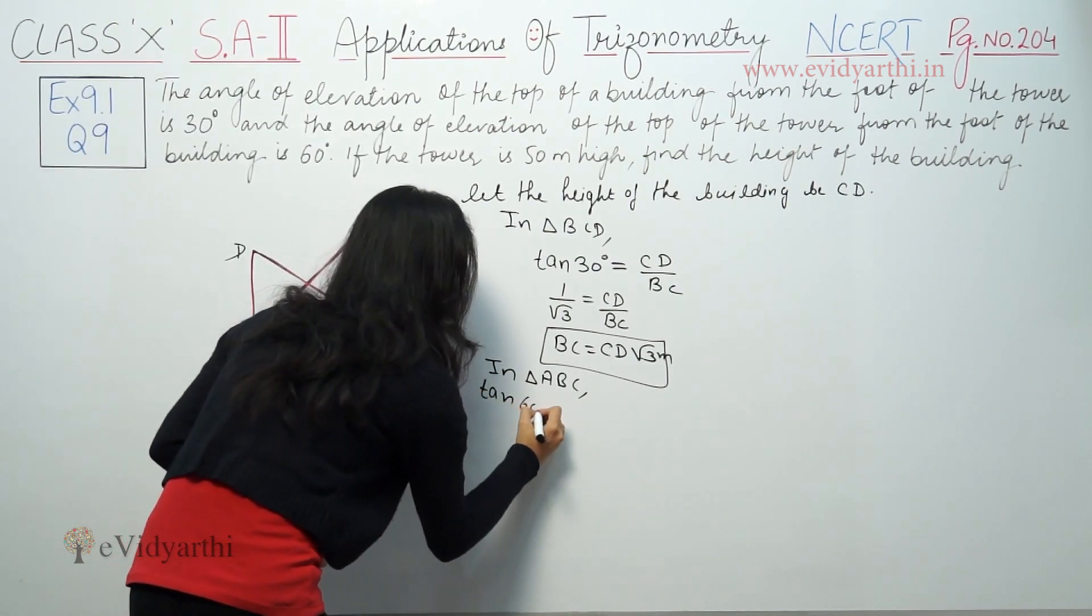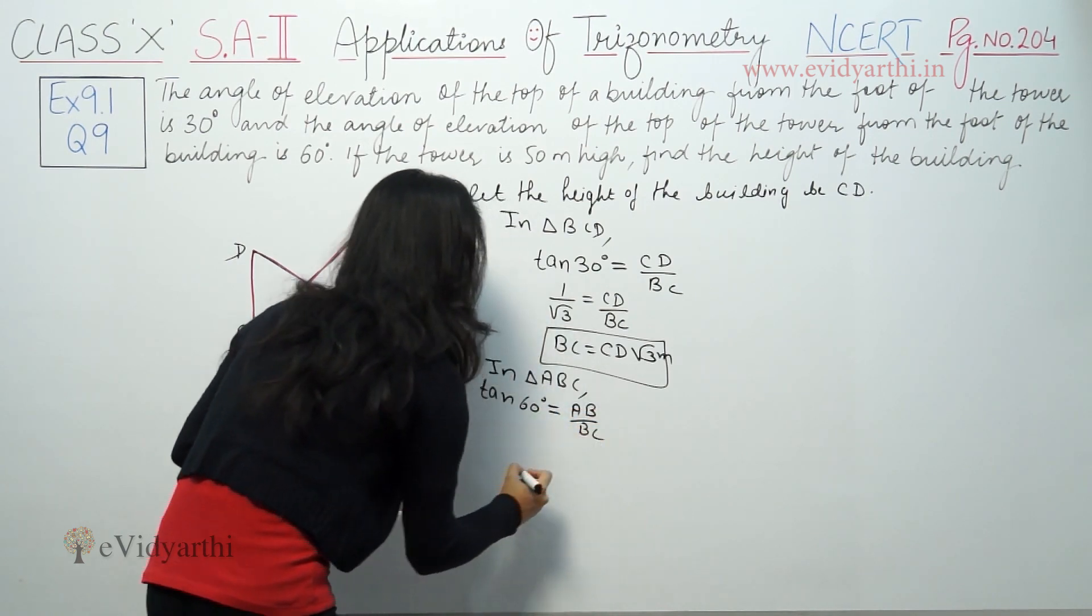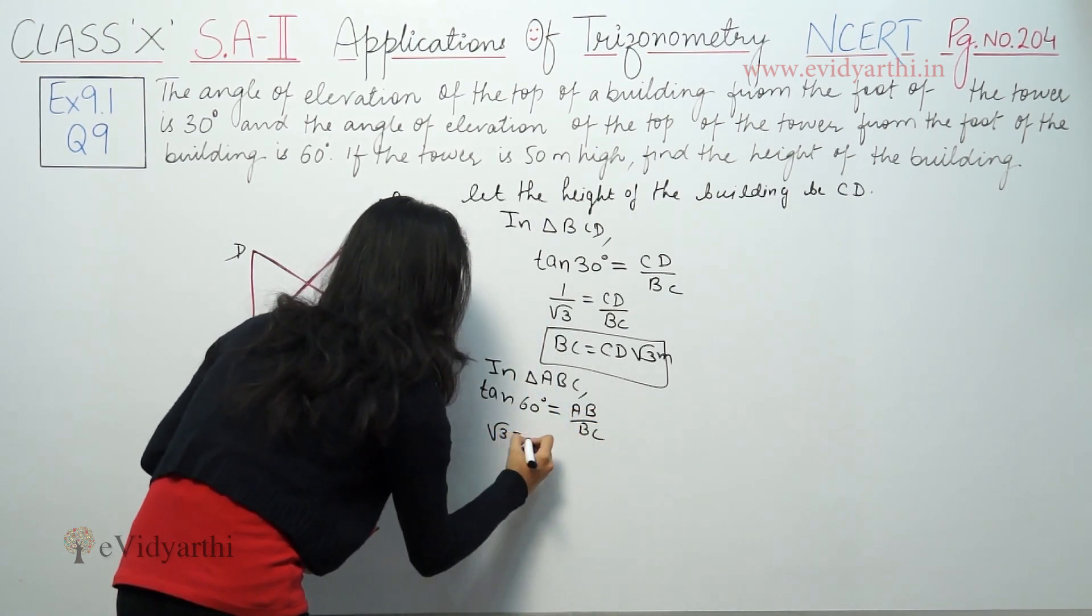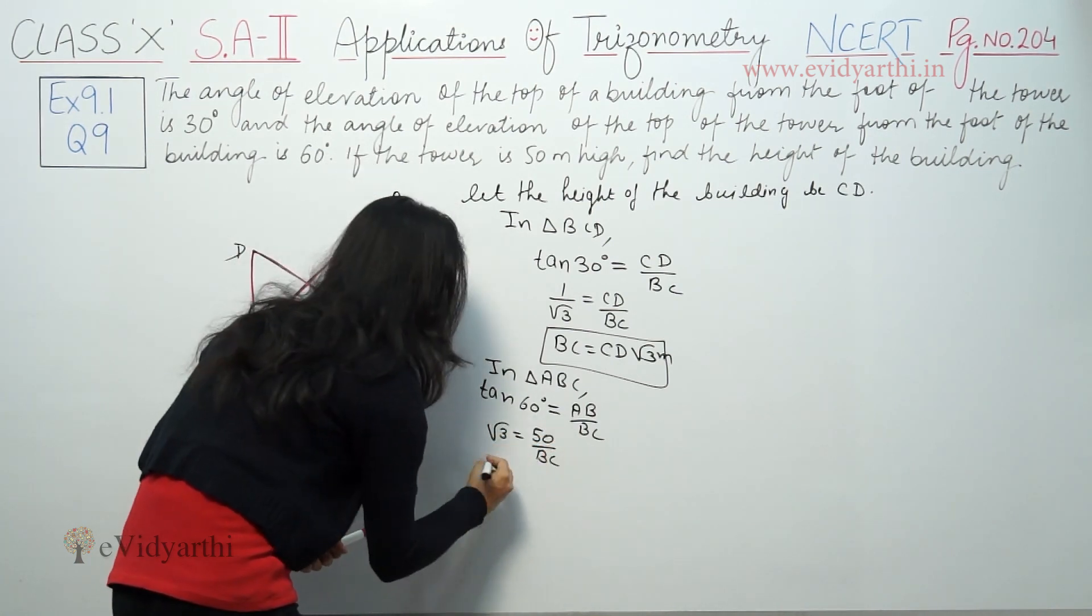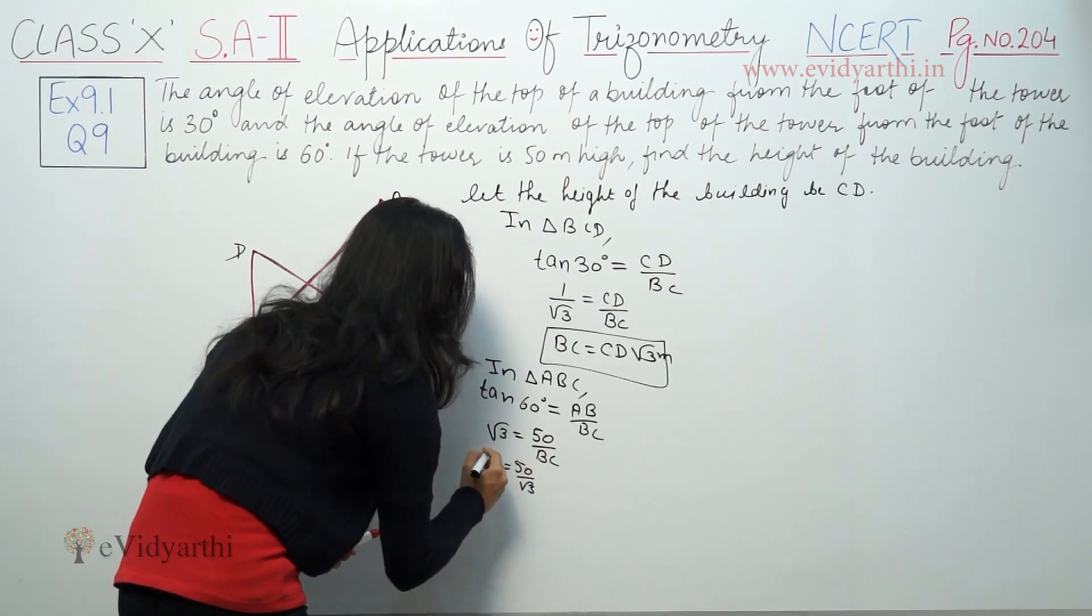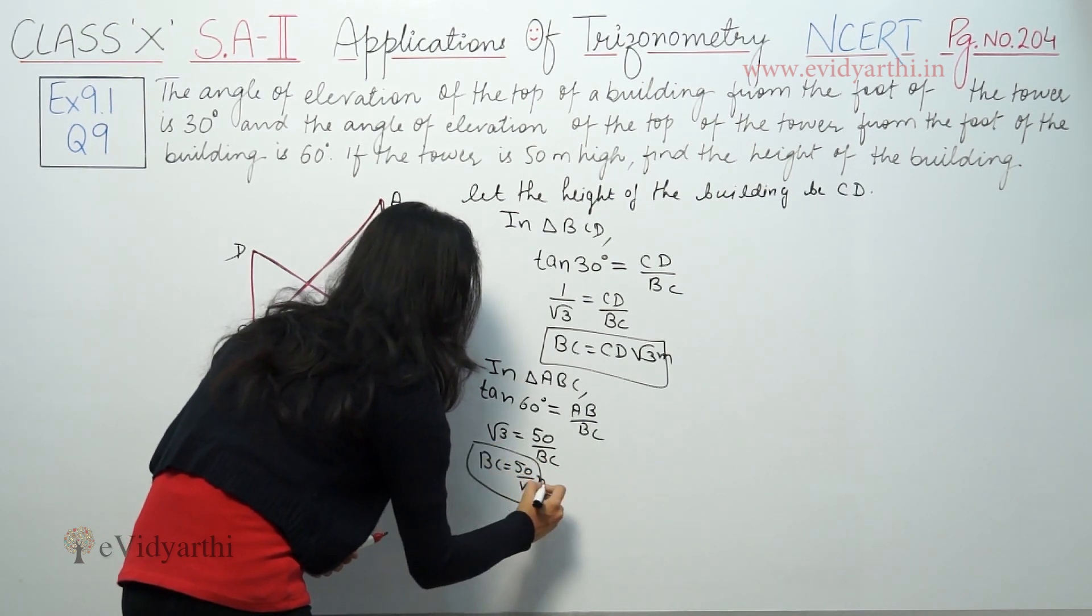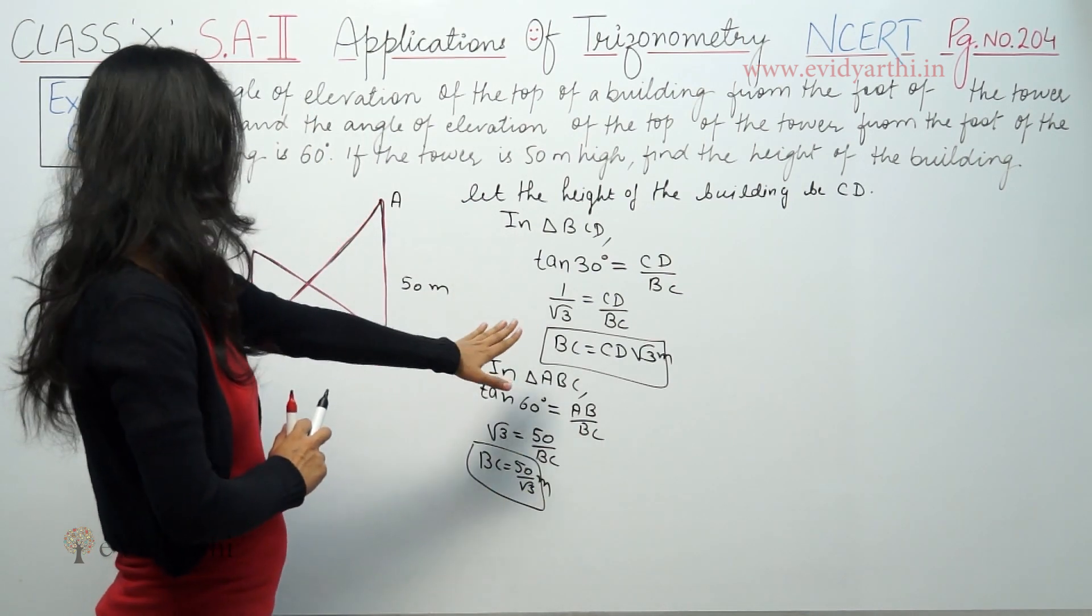tan 60 degrees equals perpendicular AB over base BC. tan 60 is root 3 equals 50 over BC. So BC equals 50 by root 3.